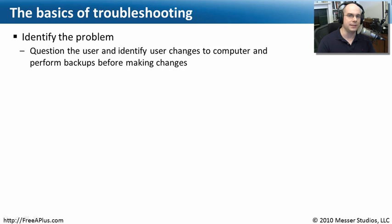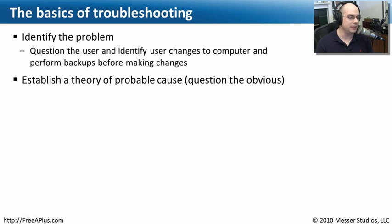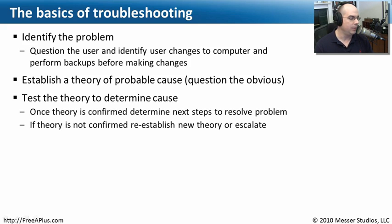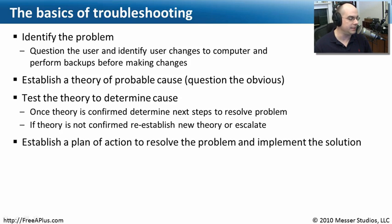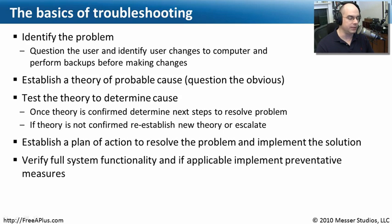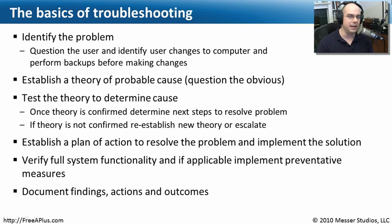What we're usually doing here is asking a lot of questions. The second step, now that we've identified the problem, is to figure out what the probable cause is — what could be causing this problem to begin with? We need to test the theory, come up with ideas about how we can really tell if our hypothesis is related to the issue. Then we establish a plan of action to resolve the problem and implement the solution. Once implemented, we verify that system functionality has been restored. Finally, we need to document what happened, the actions we performed, and what the final outcomes were.